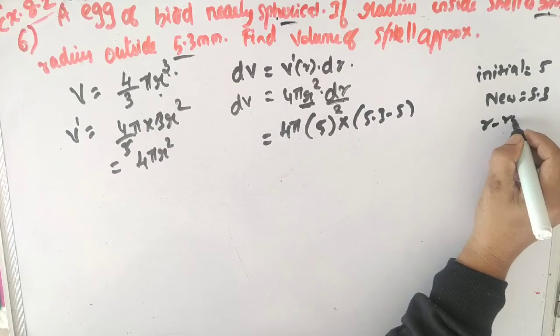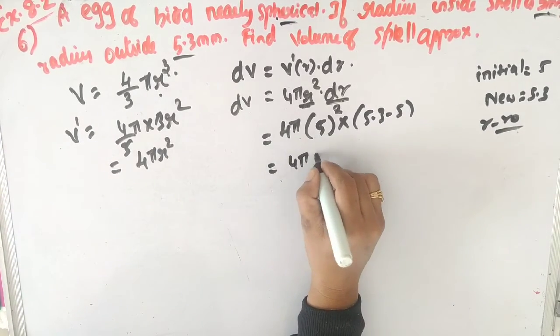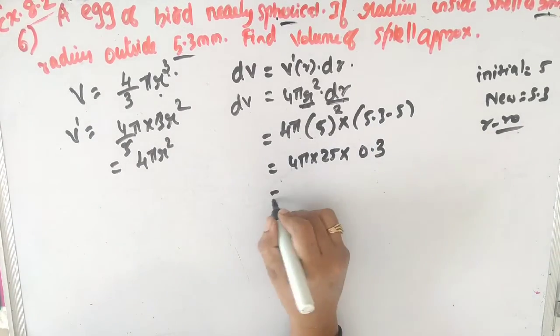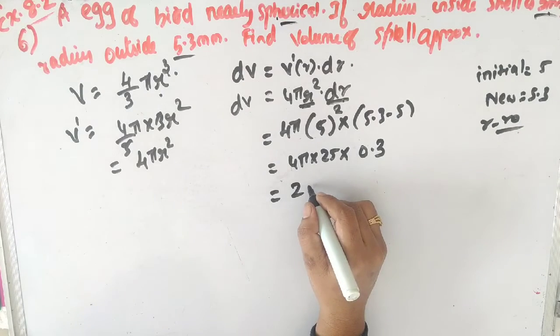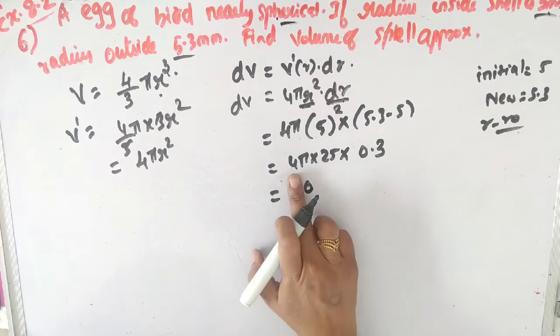4π times 5² equals 4π times 25. 4 times 25 is 100. Then 100π times 0.3 equals 30π mm³.